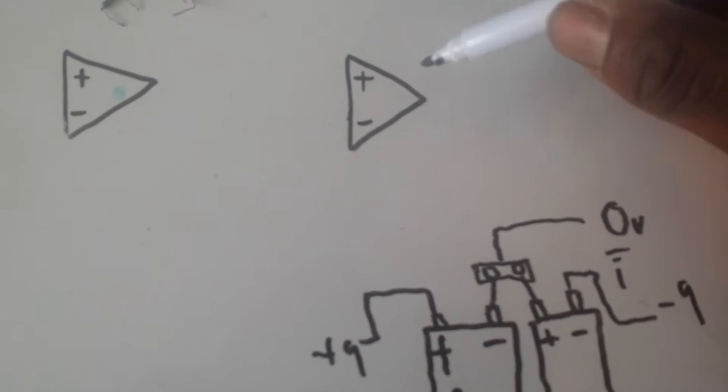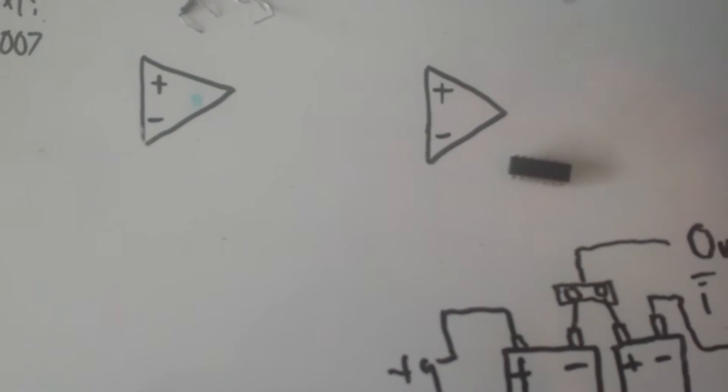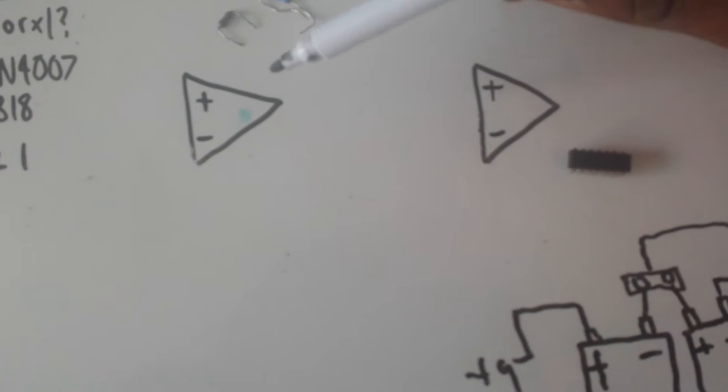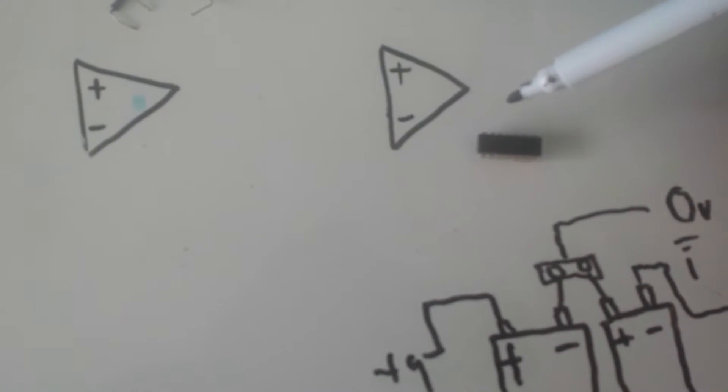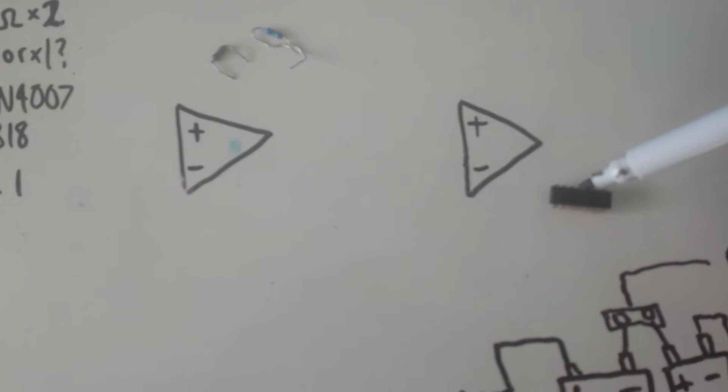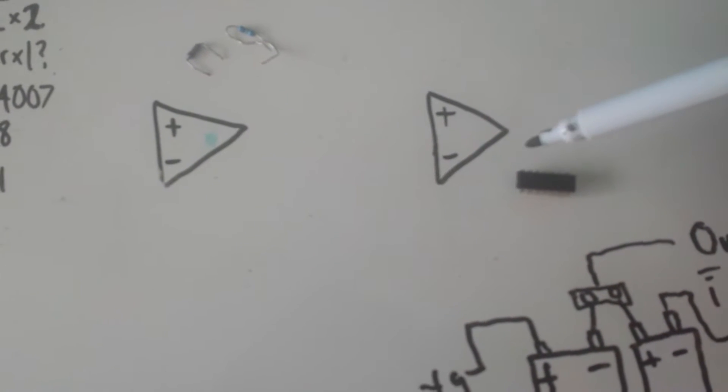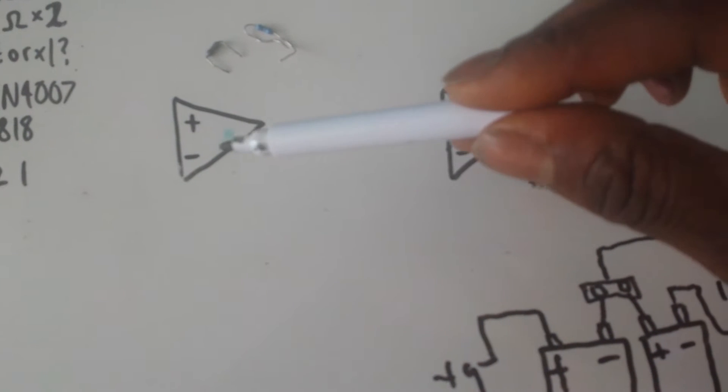What we have here, these triangles are the op-amps. These are from my first setup, which I used a TL074, which is a quad op-amp. Inside here, we have four of these.